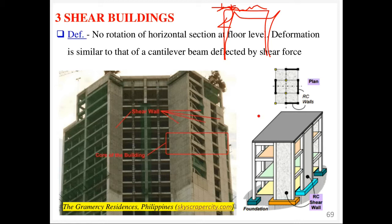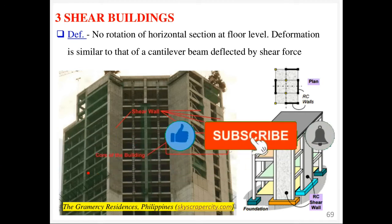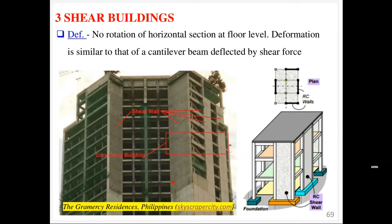This is what we have been tackling in previous cases — only horizontal movement is allowed for shear buildings. For most high-rise buildings, and even in Kenya, although we are not in a seismically active zone, things change and we have been having tremors. I'm showing an example of some apartments in the Philippines, which is one of the most highly seismic zones.